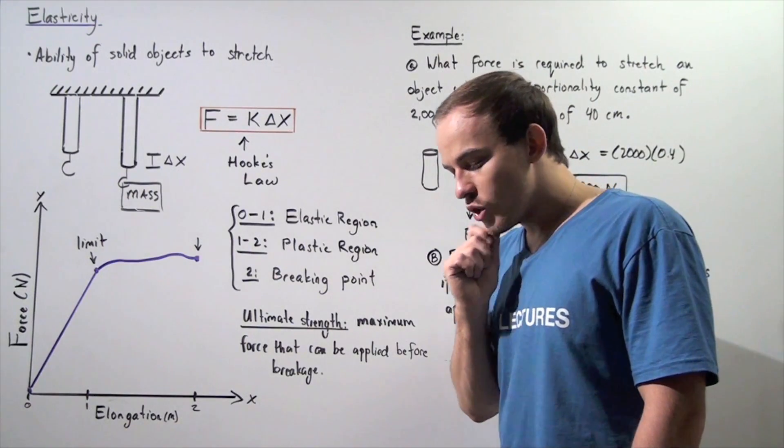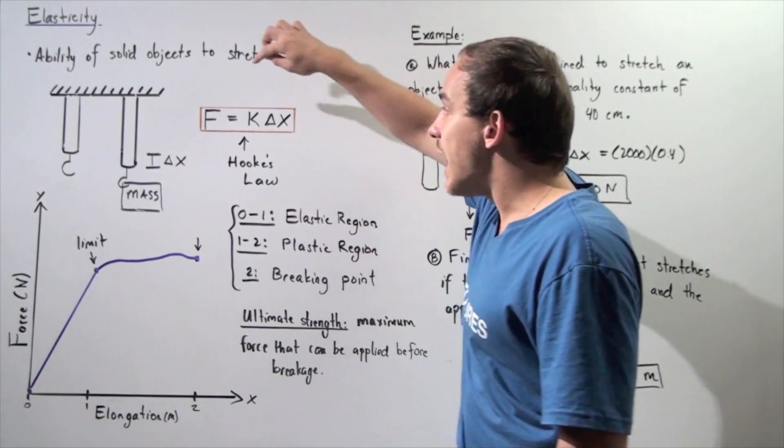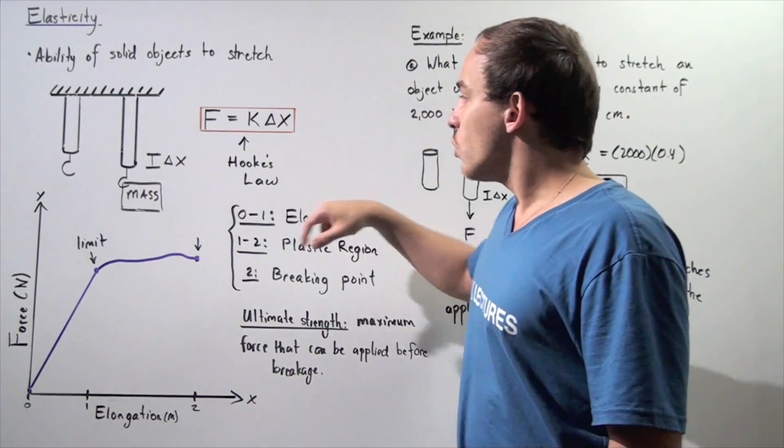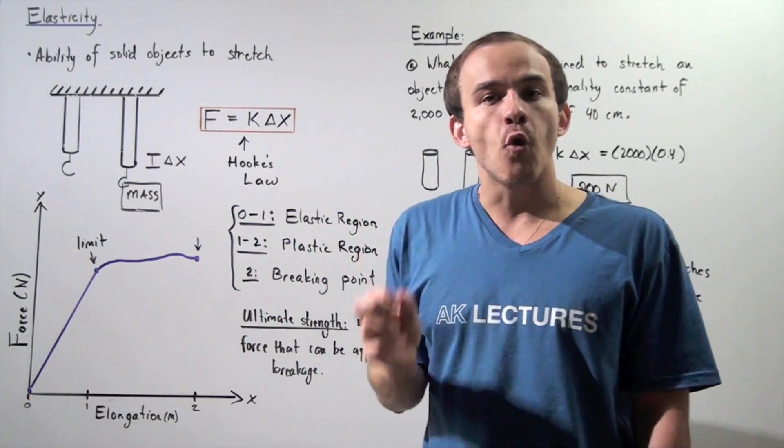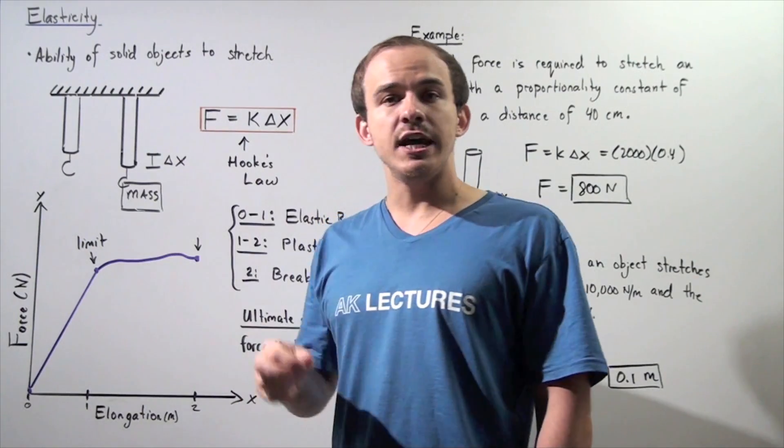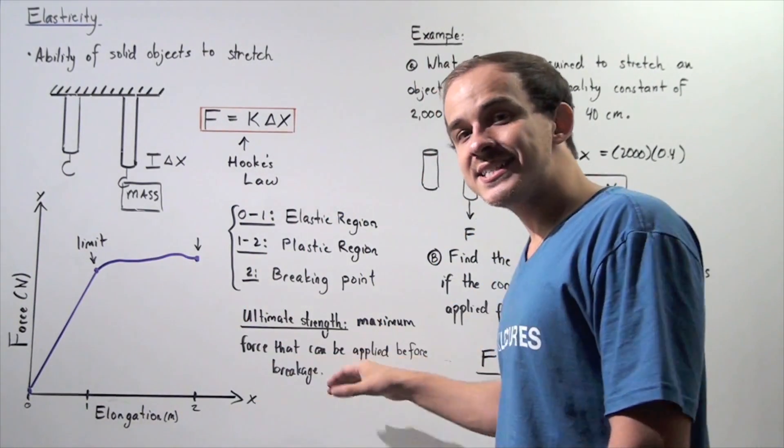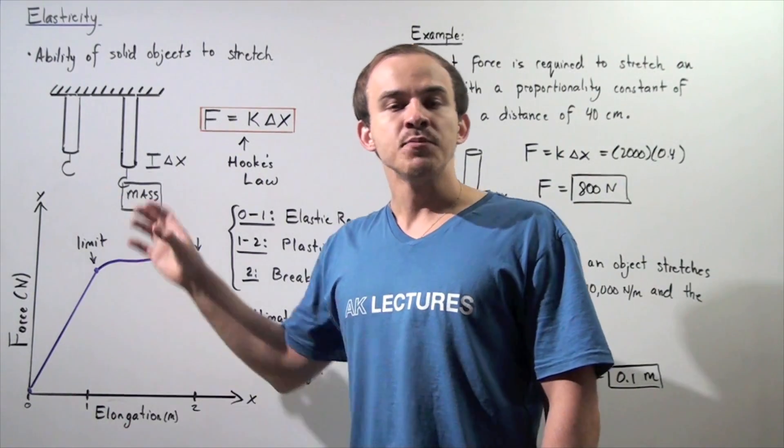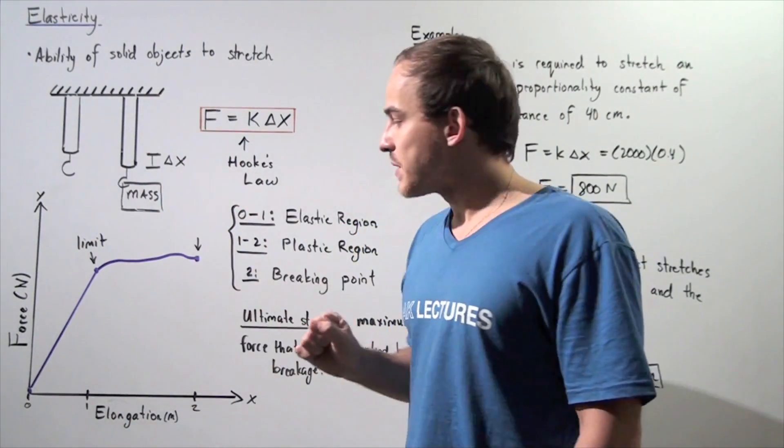Now, if we wanted to, we could also plot this equation on the xy plane. So let's suppose the y axis is our force, and the force is given in newtons, and the x axis is the change in x, it's the object's elongation when that force acts.